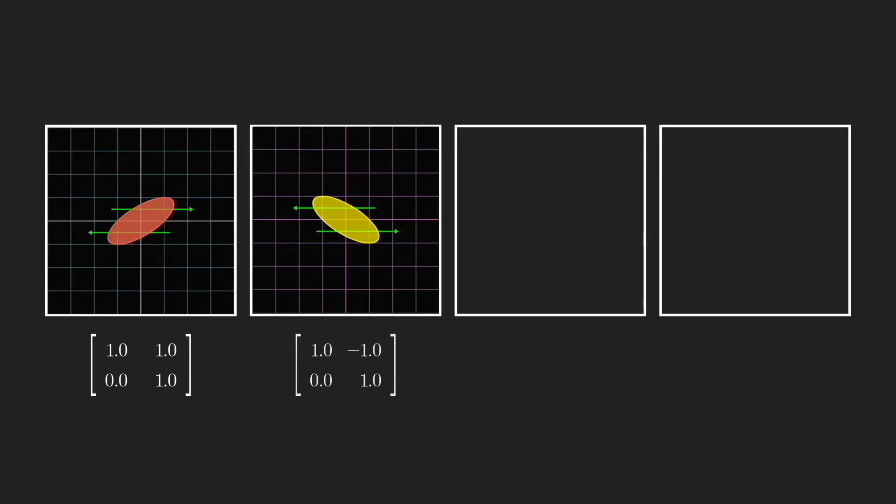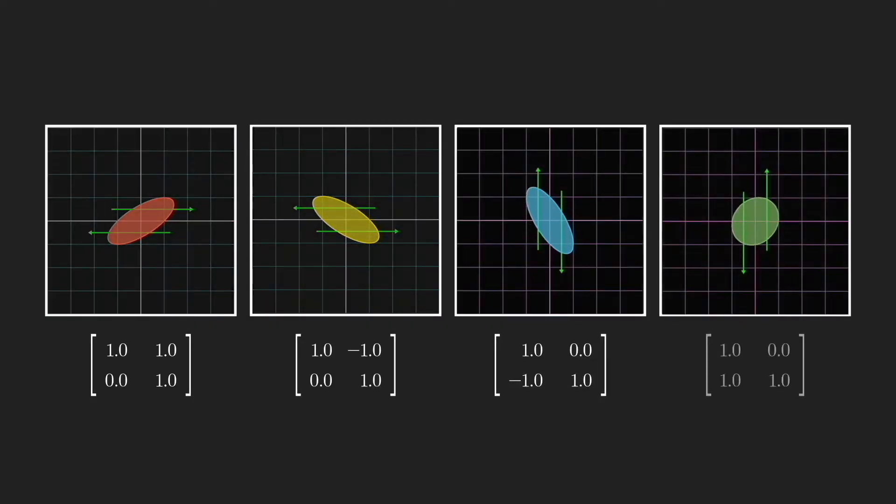In 2D, there are four directions we can apply a shear transformation, two different ways we can shear in parallel to the x-axis, and two ways in the y-axis.